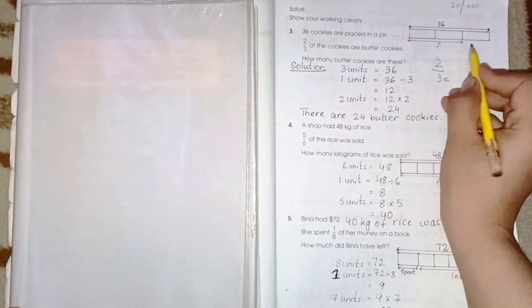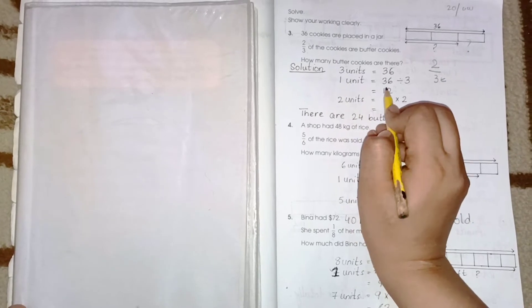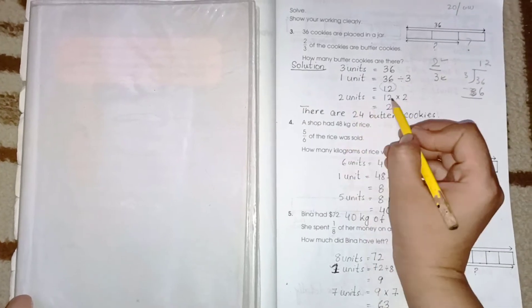Page number 77. Here we have word problems — show your working clearly. 36 cookies are placed in a jar. 2 upon 3 of the cookies are butter cookies. How many butter cookies are there? So 3 units equals 36. To find 1 unit, divide 36 by 3, which equals 12. Now we have 2 units, so 12 multiplied by 2 is 24. There are 24 butter cookies.